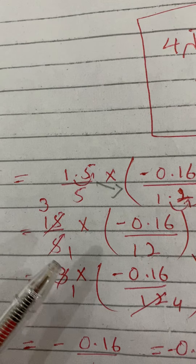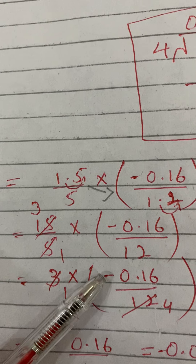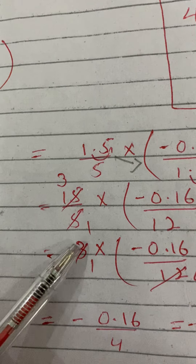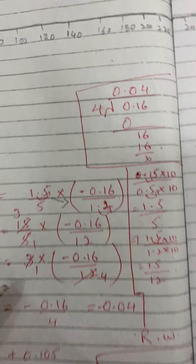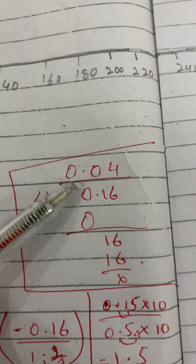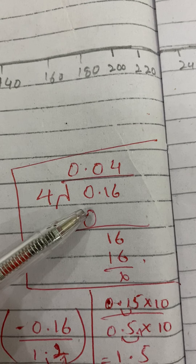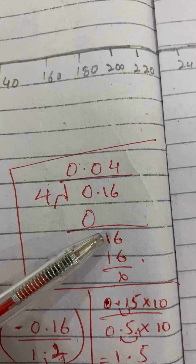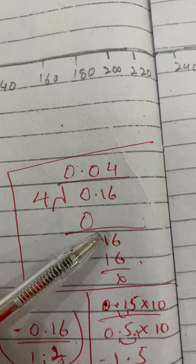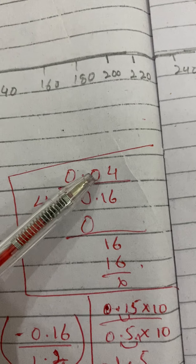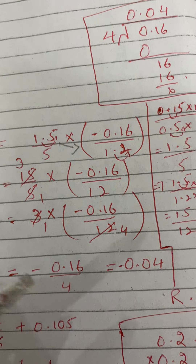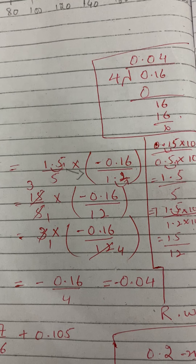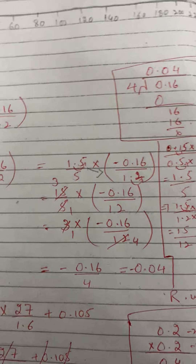We can cut the numbers: 5 threes are 15, so 15/5 = 3. Then 3 multiplied by minus 0.16 over 12 — we cut again: 3 ones are 3 and 3 fours are 12. So we have minus 0.16 over 4. Dividing: 4 into 0.16 — placing the decimal, 4 into 16 is 4, giving 0.04. So the final answer is minus 0.04. I hope it is clear — take care and Allah Hafiz.